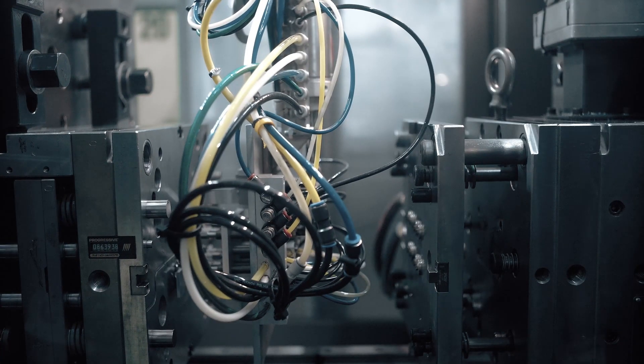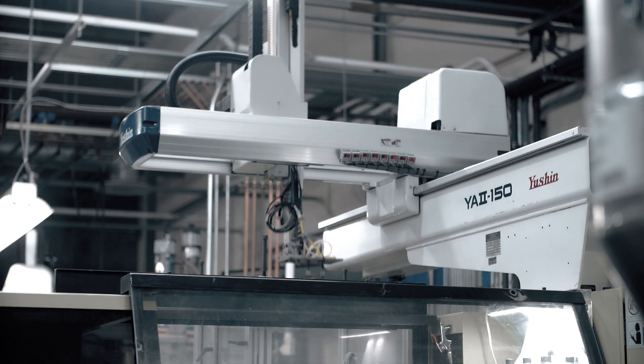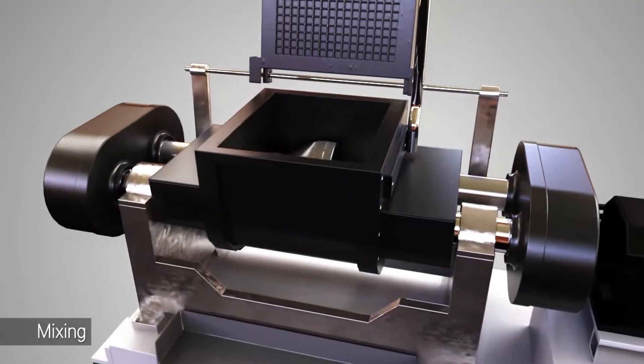Metal injection molding is divided into four steps: mixing, injection molding, degreasing, and sintering.